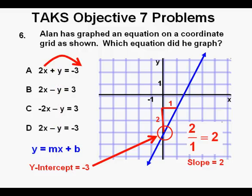For this equation in A, if we solve for y by bringing this 2x across the equal sign, the equation becomes y equals negative 3 minus 2x. But that gives us a slope of negative 2, so we cross it off because we need a slope of positive 2.